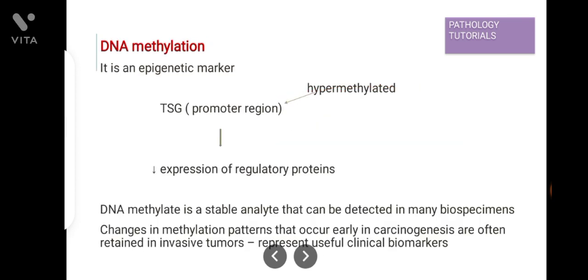Next is DNA methylation. It is an epigenetic marker. When the promoter region of a tumor suppressor gene is hypermethylated, there is decreased expression of regulatory proteins. DNA methylation is a stable analyte which can be measured in many biospecimens.